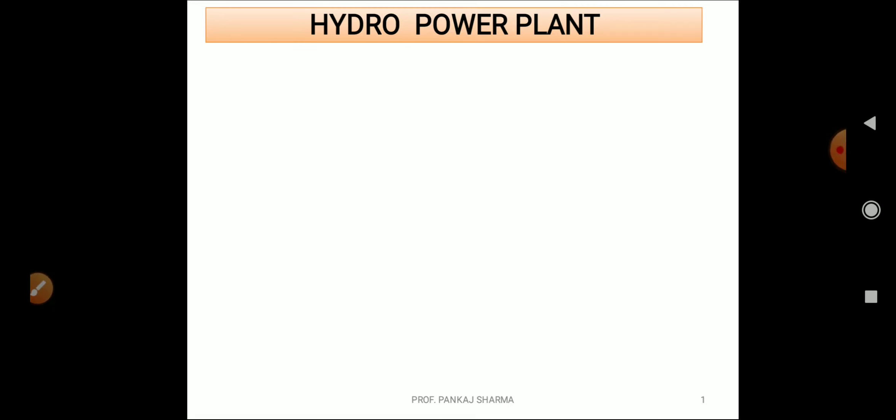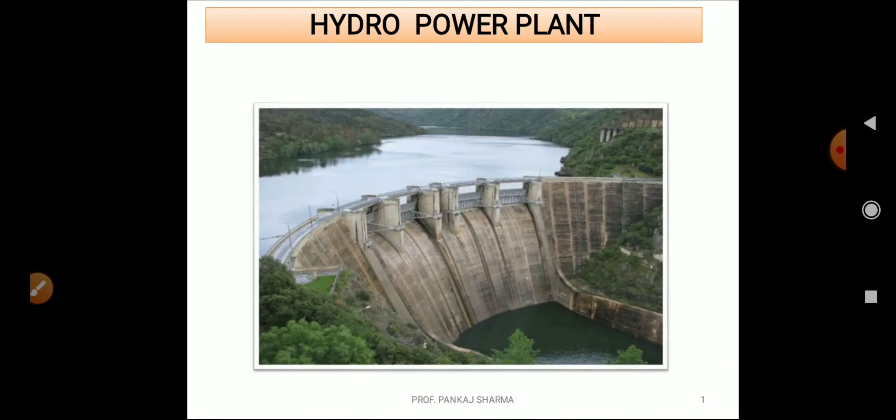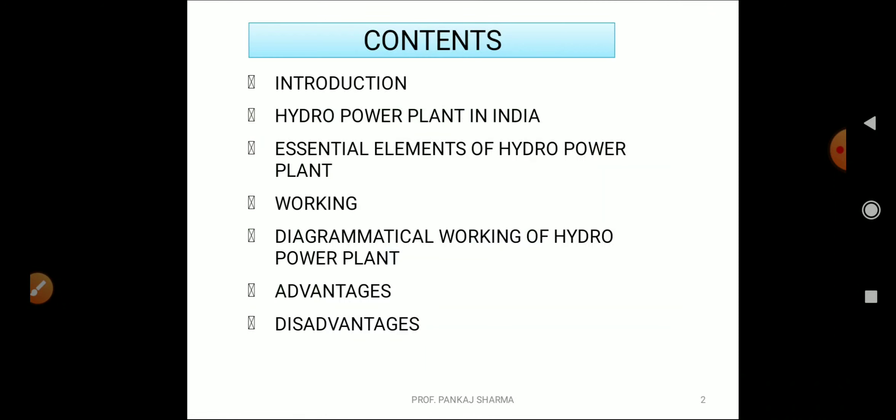Good morning, welcome back to the next video lecture on Electrical Power Generation and Economics. Today we are going to start hydropower plant. We will study the working and main components of hydropower plant. In the first slide, I am showing you a dam which is built over a river or in hilly areas where you can break rainy water. In this video we will cover introduction, hydropower plant in India, essential elements of hydropower plant, its working, diagrammatic working, advantages, and disadvantages.